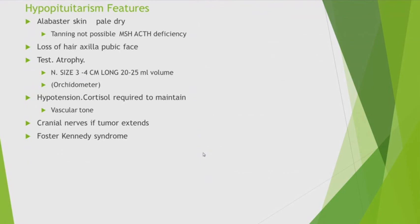Cranial nerve involvement in hypopituitarism: if there is a macroadenoma producing pressure effects, visual disturbances can occur. Raised intracranial pressure can cause sixth nerve involvement. Foster-Kennedy syndrome occurs when a meningioma compresses the optic nerve sheath on one side — producing optic atrophy on that side — while raised ICP from the tumor causes papilledema in the other eye. It need not always be a meningioma.